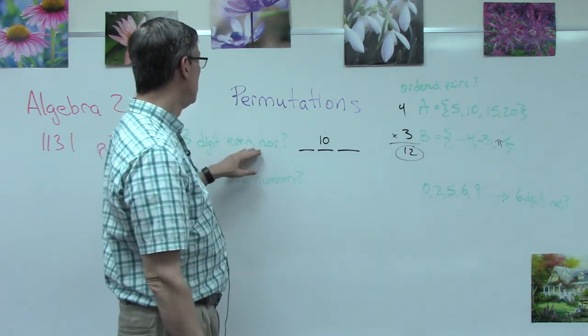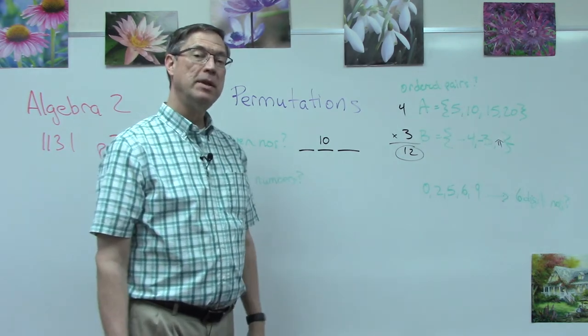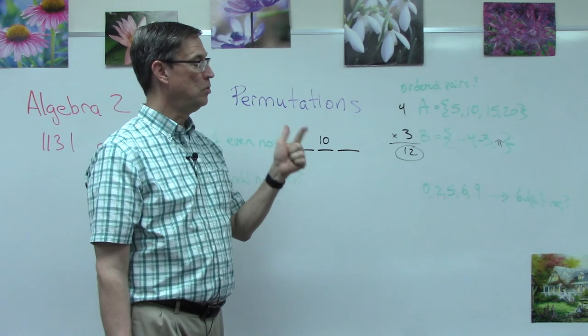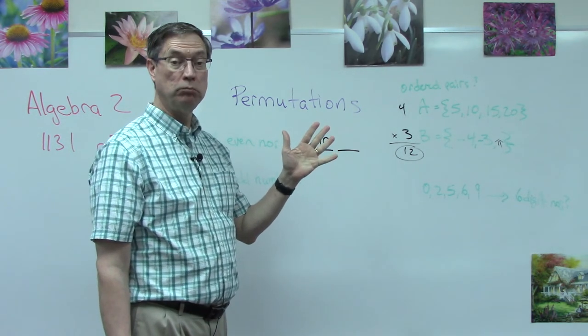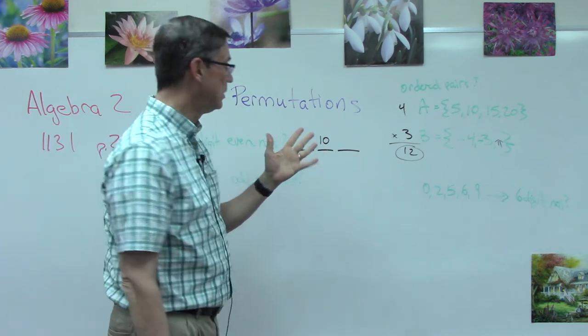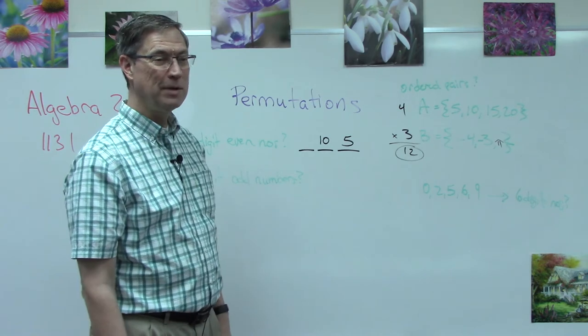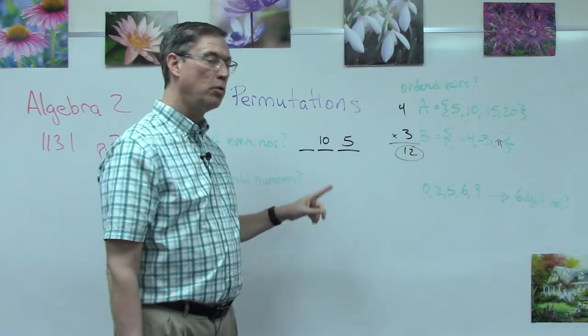If this is going to be an even number, then that means the last digit is kind of limited. It can only be two four six eight or zero. So we could include zero as the last digit, so we have five possible numbers that could go in the last digit, since it's even. Now because it's a three-digit even number, would I put a ten here in the beginning?